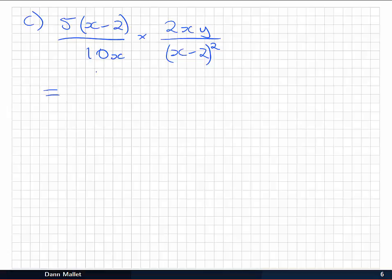So as usual we multiply across the top. Five by two gives us 10xy(x - 2). And then on the bottom 10x(x - 2)². That's the multiplication out of the way. But we should check for anything we can cancel. Any common factors.